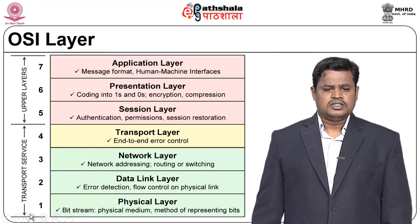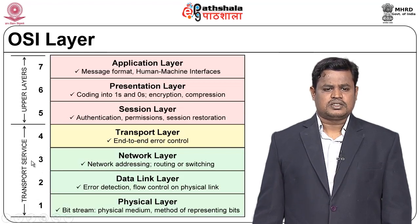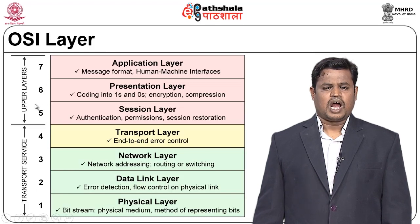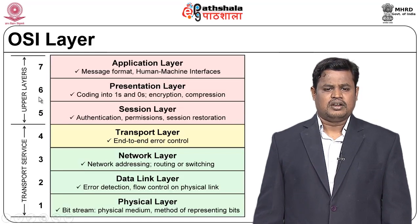Looking at the layers, layers 1 through 4 from the bottom deal with transport services, and layers 5, 6, 7 are upper-layer services. In the TCP/IP model, layers 7, 6, and 5 — the application, presentation, and session layers — are all three combined into a single layer called the application layer.